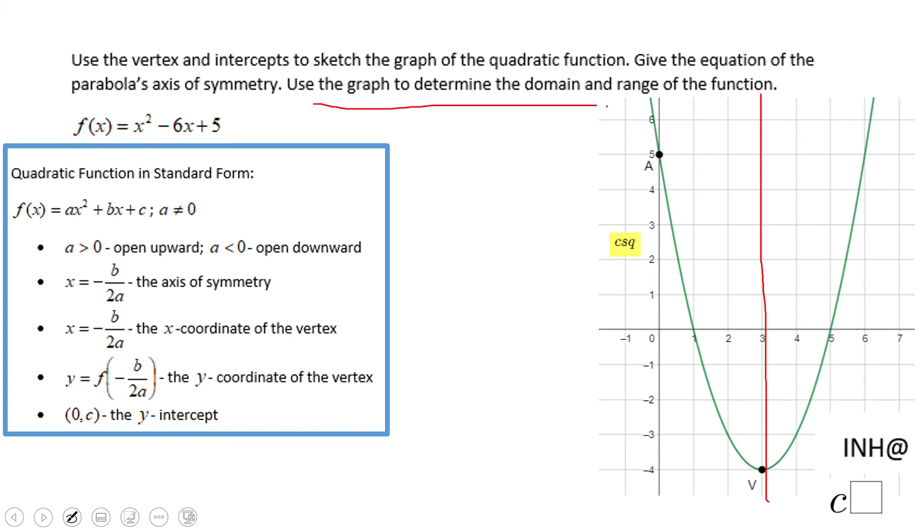Now use the graph to determine the domain and the range. The domain of any quadratics is any real number, negative infinity to positive infinity. The one that you need to be careful with is the range, which is very simple if you have the graph. Look here, that's the range. Any number greater than or equal to negative 4, and that's it.